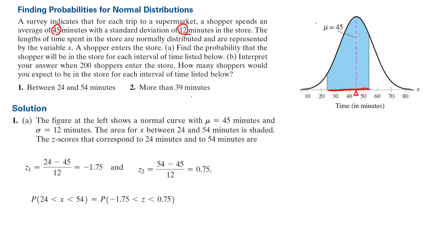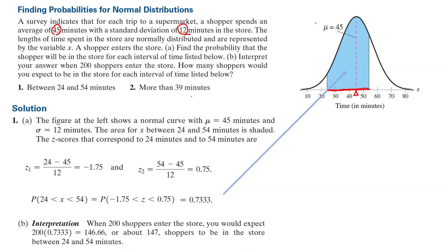The probability that x is bounded between 24 minutes and 54 minutes is the same as probability that z is bounded between negative 1.75 and 0.75. Both of them are equal to 73.33%. This is the area below the curve bounded between these two numbers. The interpretation is when 200 shoppers enter the store, you expect 200 times the probability, which is 0.733, for 146.66 shoppers.